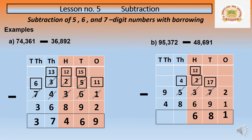Now let us move to the thousands place. After giving away one thousand, 5 thousand has become 4 thousand. In 4 thousand we have to minus 8 thousand — same problem. So we borrow from 90 thousand. That 9 becomes 8 — eighty thousand. After taking the 10 thousand, this becomes 14. Fourteen minus 8 equals 6.